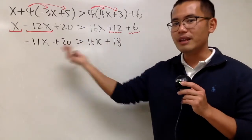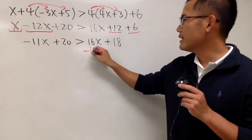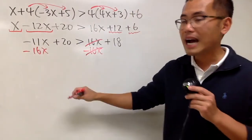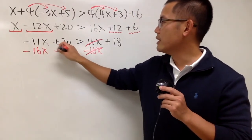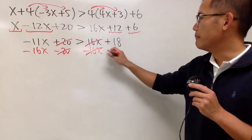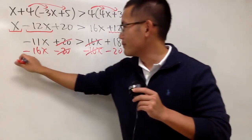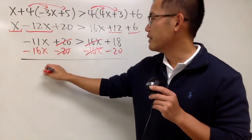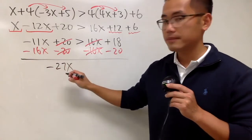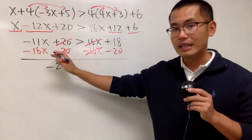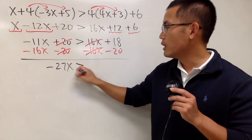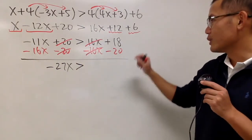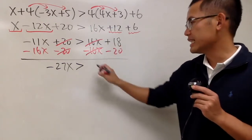Now let's move the x to the other side and move the number here. We minus 16x so that they cancel, and we minus 20 so that this and that will cancel. So negative 11x minus 16x gives us negative 27x. We're just subtracting, so do not change the inequality symbol — keep it as is. On the right-hand side, 18 minus 20 is negative 2.